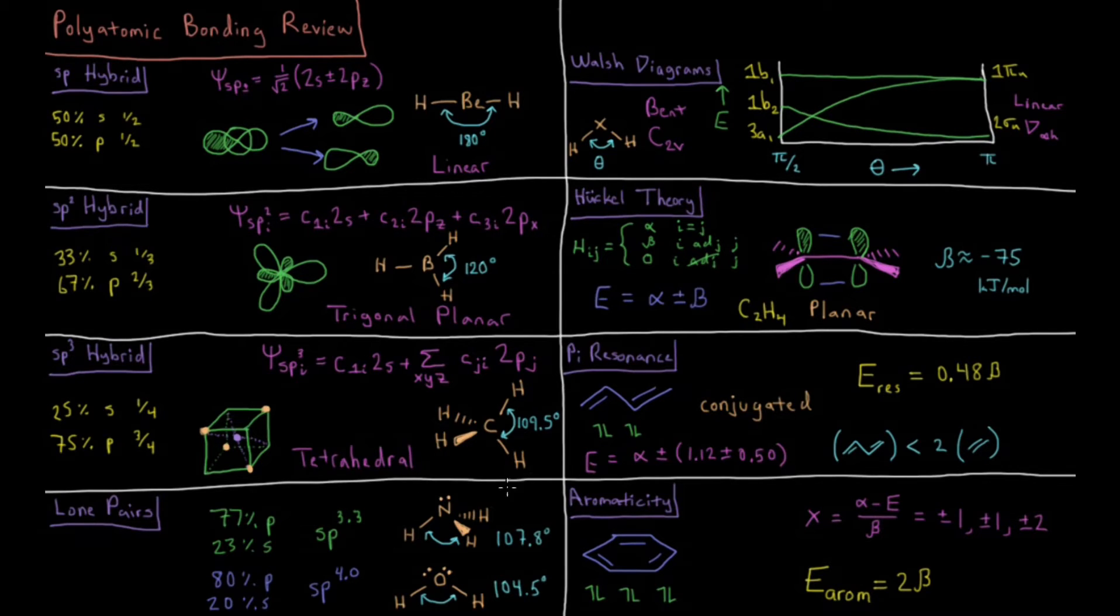Things get more complicated when we go to molecules with lone pairs, like ammonia with one lone pair and water with two lone pairs. The bond angles for those are 107.8 and 104.5 degrees respectively. We see the trend of bond angles decreasing as the number of lone pairs increases, as predicted by VSEPR theory from Gen Chem.